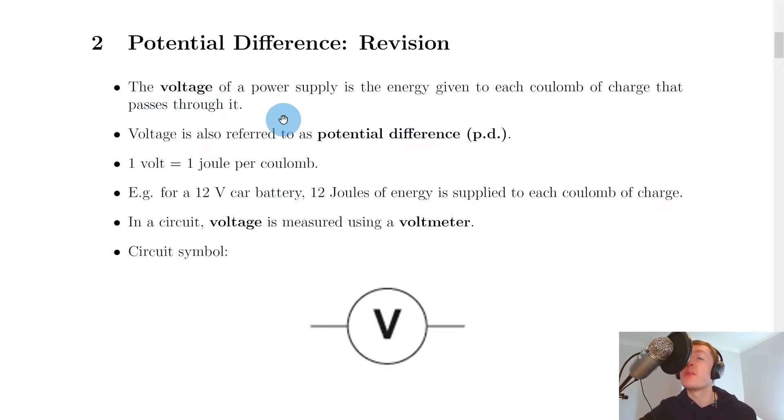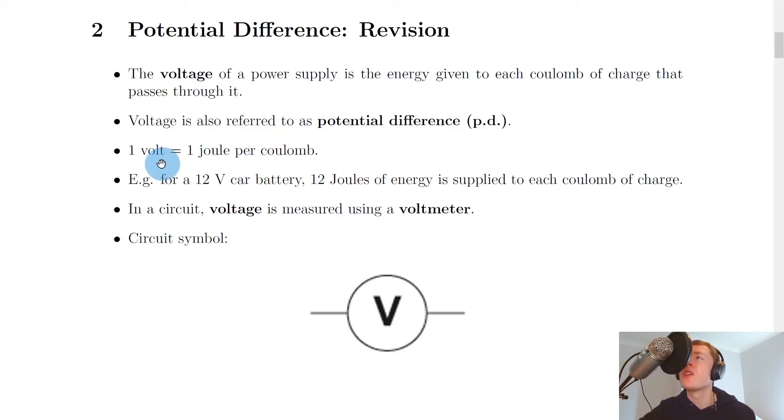Voltage is also referred to as potential difference, which can be shortened to p.d. From this definition, we can conclude that one volt is equal to one joule per coulomb, and that comes from the wording here.